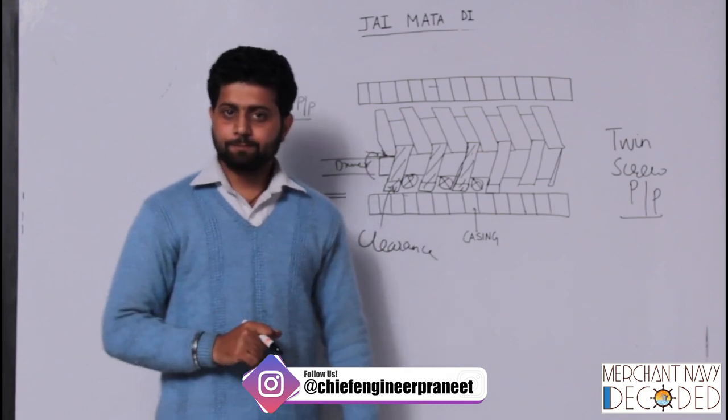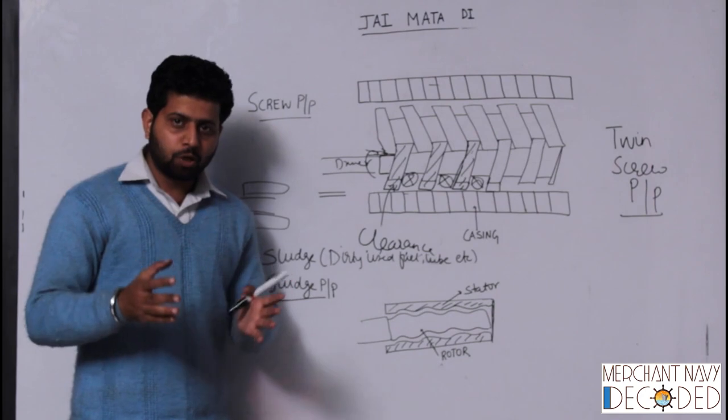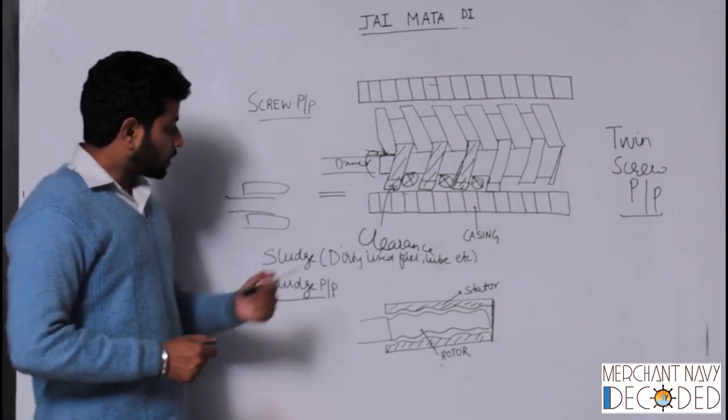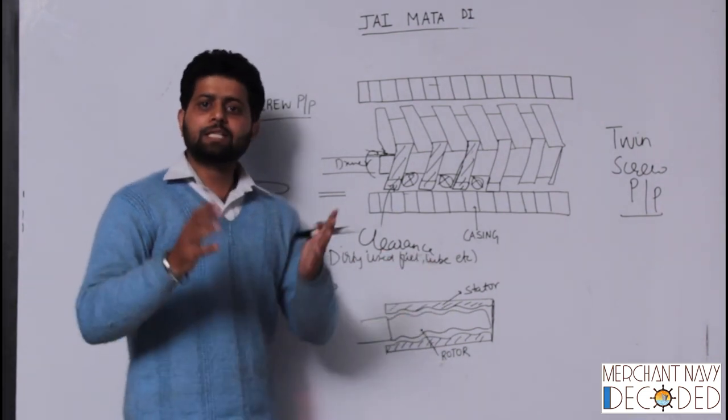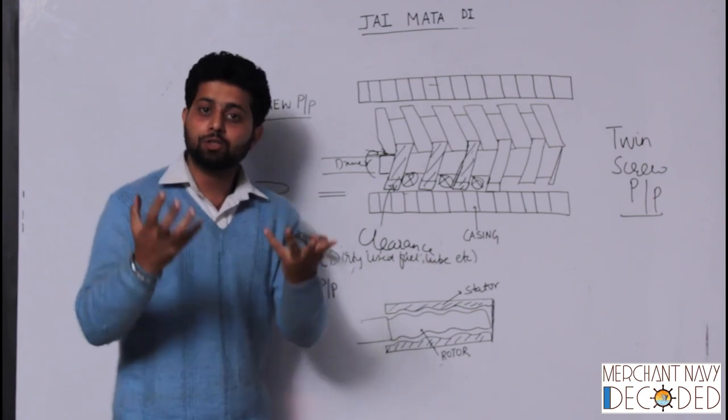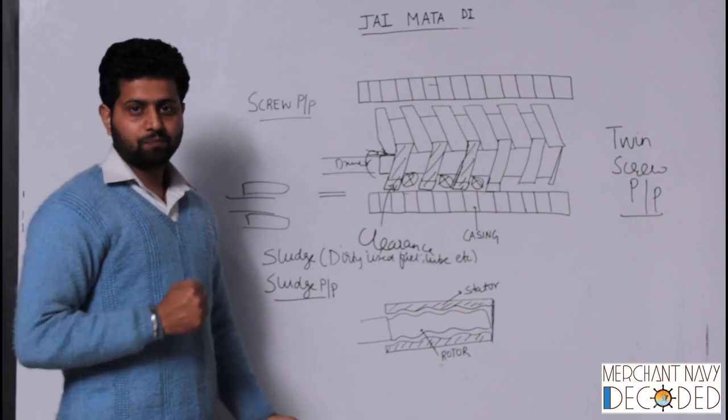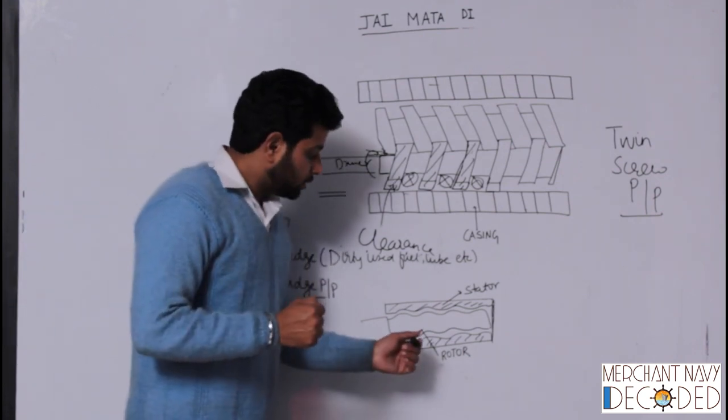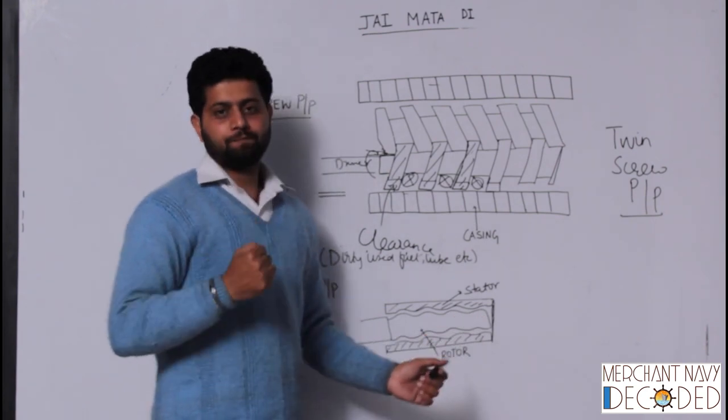Screw pumps are not just used for fuel oil as I told earlier. They are also used for removing sludge. What is sludge? Dirty used fuel oil, lube oil which cannot be used anymore, which we incinerate on ship, which we burn on ship. So for that we use a sludge pump.